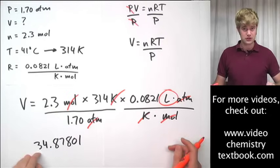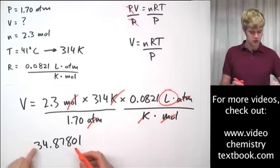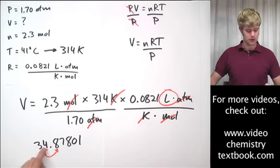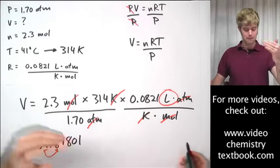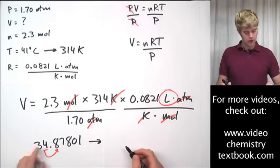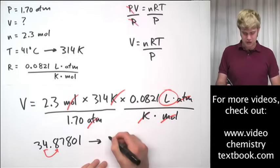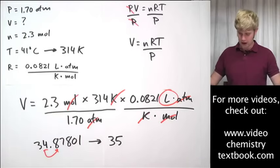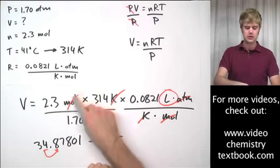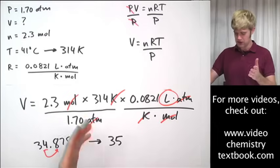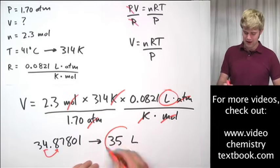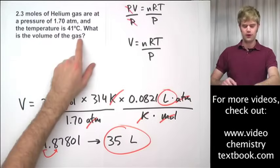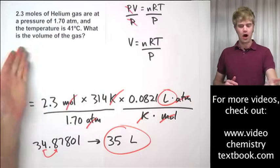Which means that my final answer has to have two significant figures. So, I keep the 3. I keep the 4. And I look next door to the 8 to see whether I round this up or keep it the same. It's an 8. So, I'm going to bump it up. So, 34 point blah, blah, blah, blah is going to turn into 35 rounded to two significant figures. And what are my units? I know what my units are. My units are liters because everything else here canceled out. So, 35 liters is the volume of the gas under these conditions.